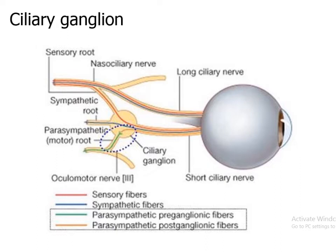The parasympathetic fibers associated with the oculomotor nerve pass through the ciliary ganglion. Pre-ganglionic parasympathetic fibers, having their cell bodies in the Edinger-Westphal nucleus, synapse with the cell bodies of the post-ganglionic parasympathetic fibers at the ciliary ganglion. Post-ganglionic parasympathetic fibers pass through the short ciliary nerves to enter the eyeball.